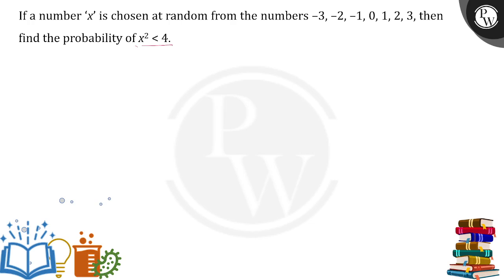The square of each number: (-3)² = 9, (-2)² = 4, (-1)² = 1, 0² = 0, 1² = 1, 2² = 4, 3² = 9.